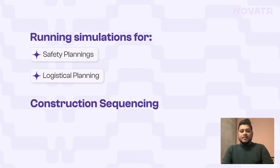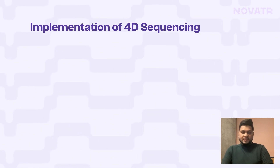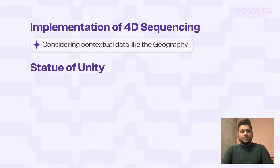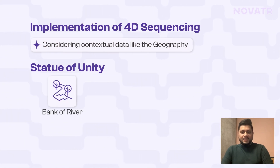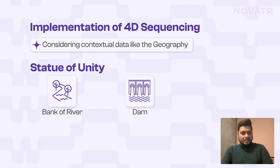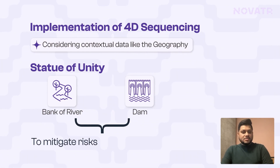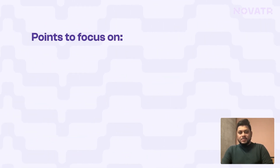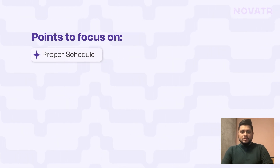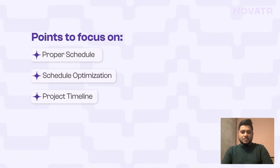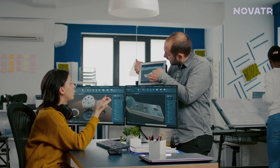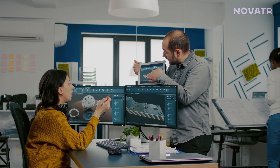Moving on to the modeling part, the BIM implementation also covered 4D sequencing. When building statues, there's contextual data to consider — the geography is not straightforward. We are actually dealing on the banks of a river with a dam associated to it, so sequencing had to ensure no risks or calamities in the future. To sync sequences with schedules and optimize timelines, 4D applications like Synchro and Navisworks were used, where sequencing was simulated and shown to project managers and executives.